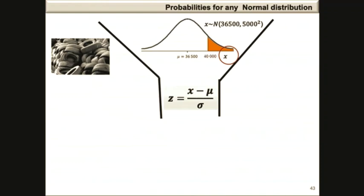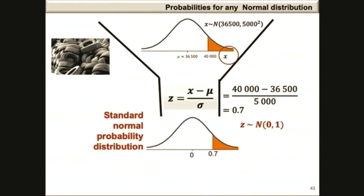For this particular question, our z-score will be 40,000 minus 36,500 divided by 5,000, and the answer is 0.7. On our graph, the probability will be the area shaded to the right of 0.7.